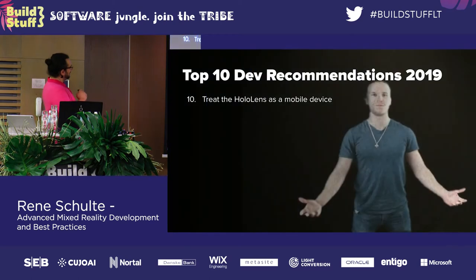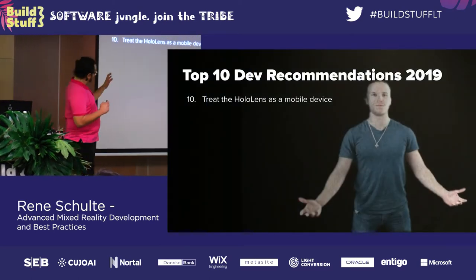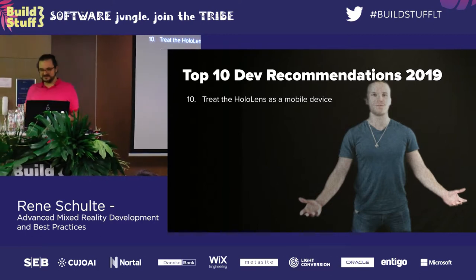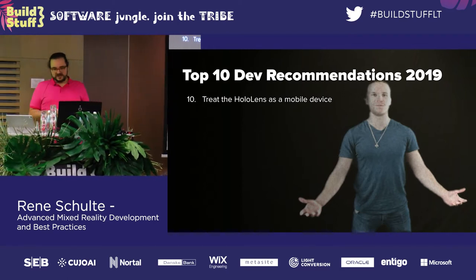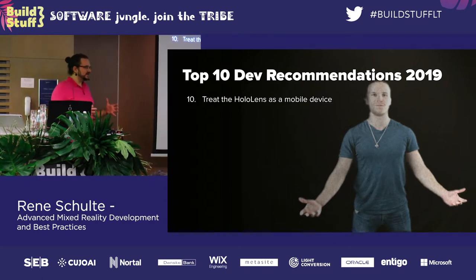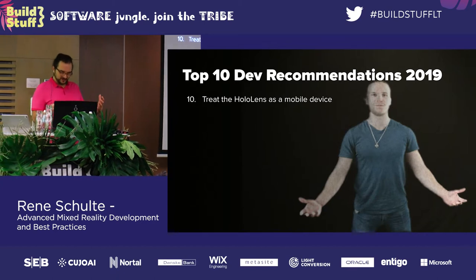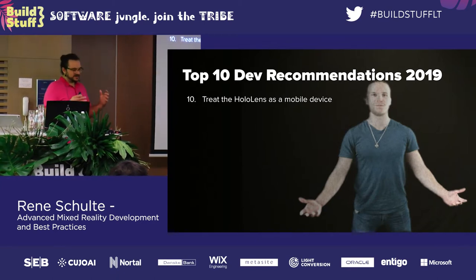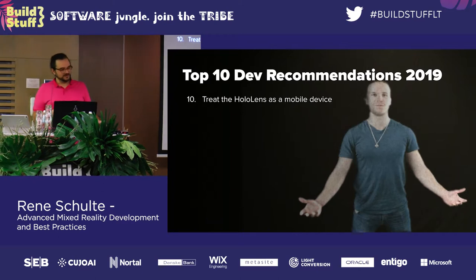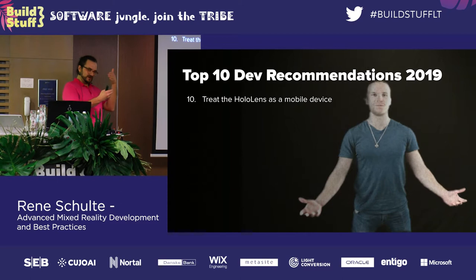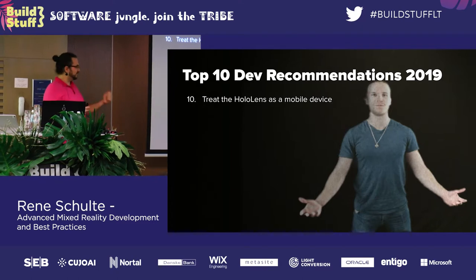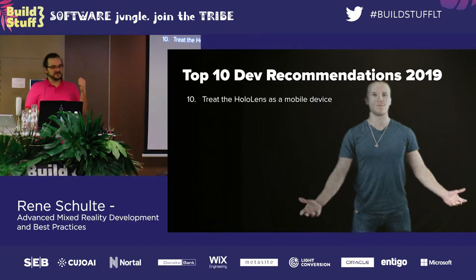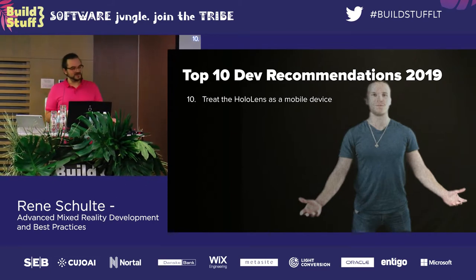Starting at number 10: treat the HoloLens as a mobile device — and this applies to Magic Leap and mobile AR phones as well. These devices are limited in rendering power; you don't have a beefy computer running all the compute. You have a limited rendering budget. HoloLens, for example, is fill-rate bound — if you render virtual content very close to the camera it fills a lot of pixels, and an expensive pixel shader will drop the frame rate dramatically. Keep your pixel shaders and lighting models simple.